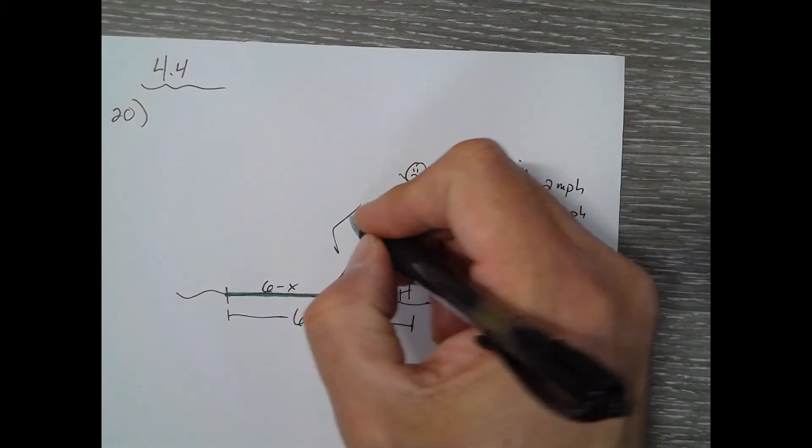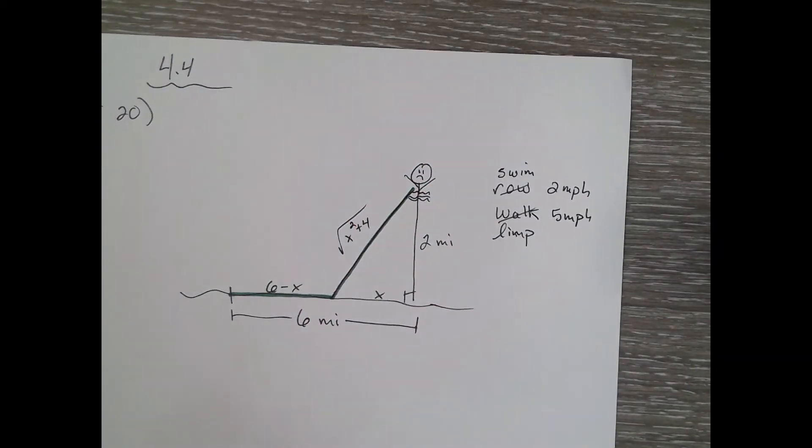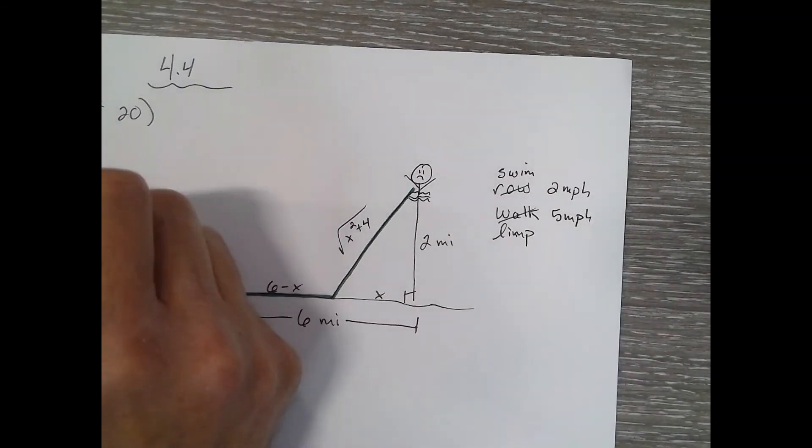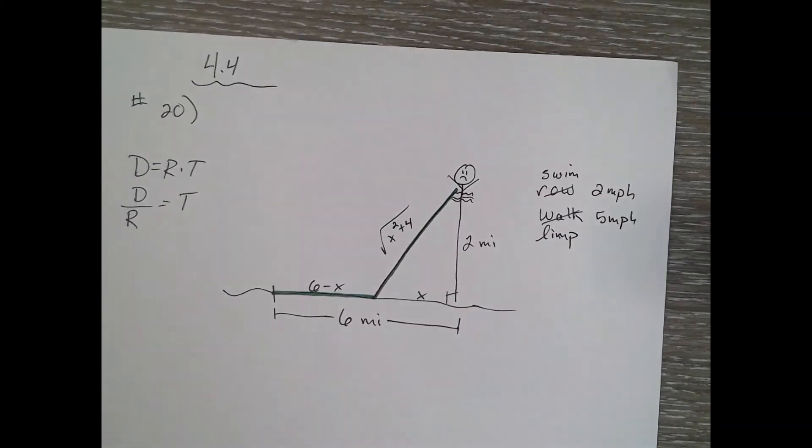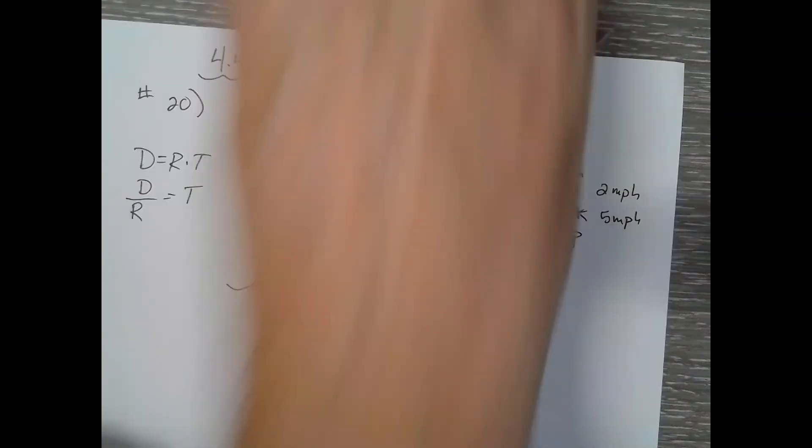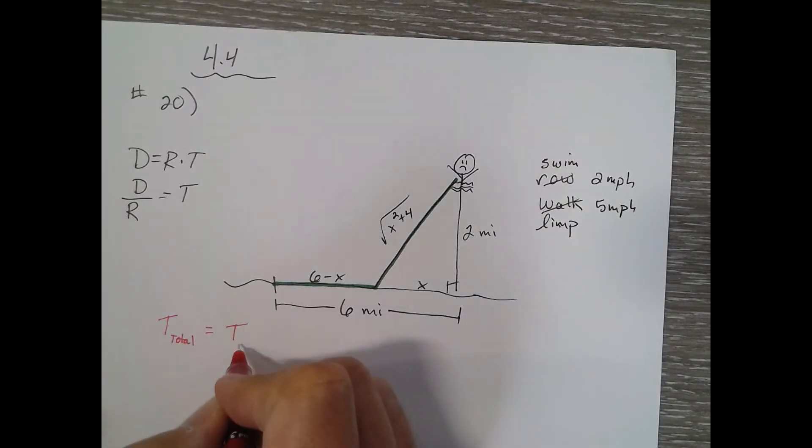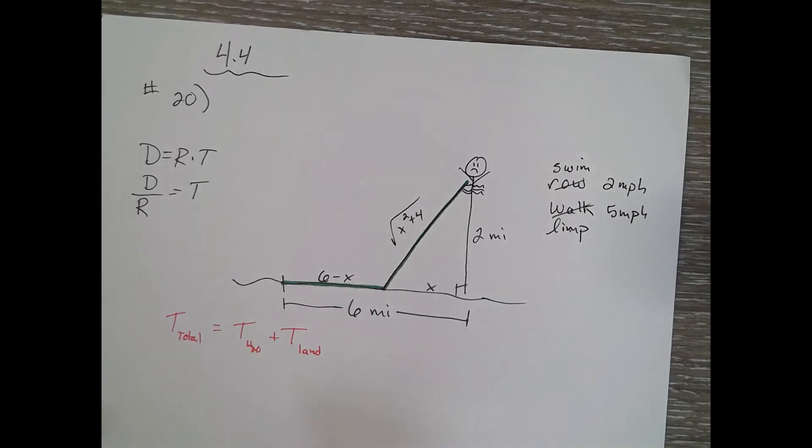The hypotenuse of this right triangle would be the square root of x squared plus four. Those are distances. We want to minimize time, and we know distance equals rate times time, so time equals the distance over rate. We can find the time total is equal to the time in the water plus the time on land.